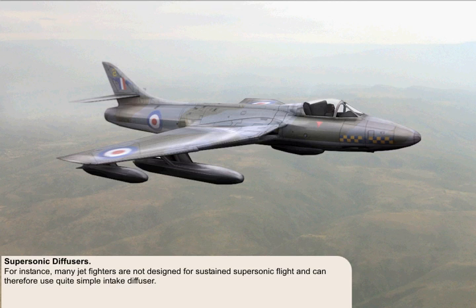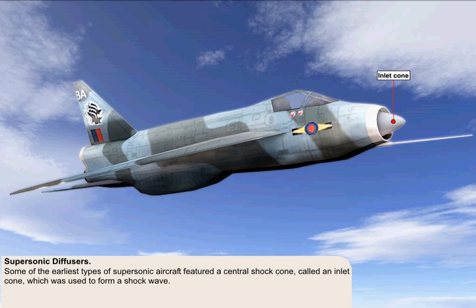For instance, many jet fighters are not designed for sustained supersonic flight and can therefore use quite a simple intake diffuser. Some of the earliest types of supersonic aircraft featured a central shock cone called an inlet cone which was used to form the shock wave. This form of shock cone can be seen here on the English Electric Lightning.